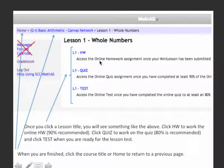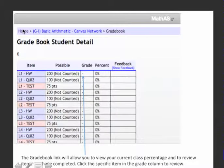When you're finished, you can click the course title up here or click home to return to one of those pages. When you click the grade book link, you're going to be able to review your current class percentage, and you're going to be able to review items you have completed.